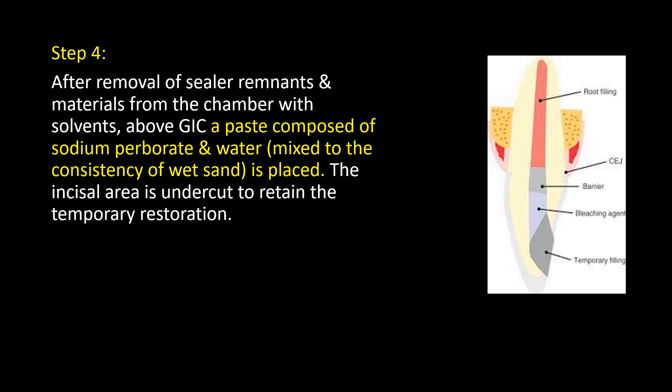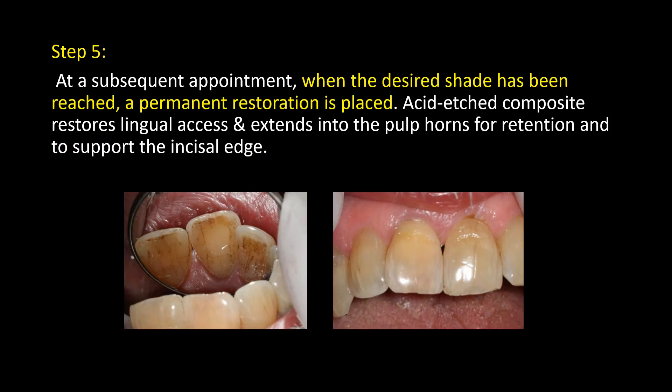The incisal area is undercut to retain the temporary restoration. Step 5 — At a subsequent appointment, when the desired shade has been reached, a permanent restoration is placed. Acid-etched composite restores lingual access and extends into the pulp horns for retention and to support the incisal edge.